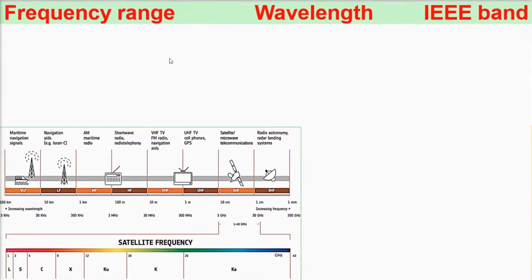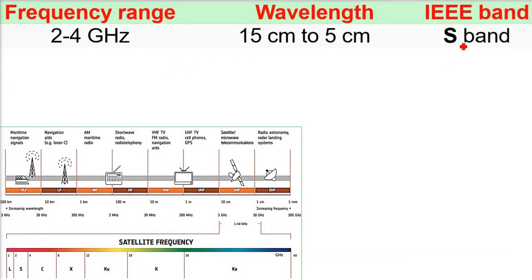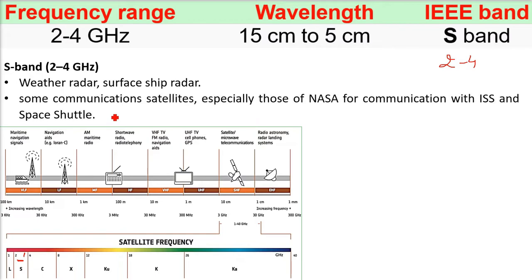Then from 2 to 4, this comes S band. This is 15 centimeter to 5 centimeter. The S band here, I am talking. What are the functions for 2 to 4 gigahertz S band? Weather radar, surface ship radar. There are certain communication satellites, especially those of NASA for communication with the ISS and the space shuttle. 2 to 4 gigahertz S band.